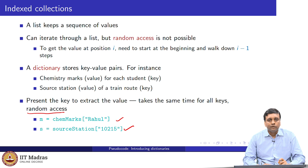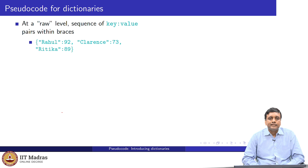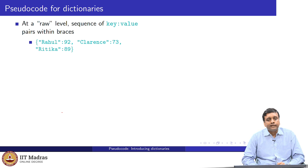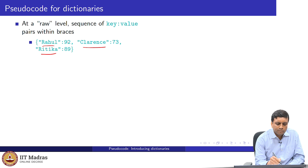Now let us look at the notation we will use in pseudo code for dictionaries. At the raw level, a dictionary is stored as a sequence. Each element in the sequence has a key and a value, written as key colon value. For instance, here is a dictionary with marks for three students: the keys are Rahul, Clarence, and Hrithika, and the corresponding marks are 92, 73, and 89.